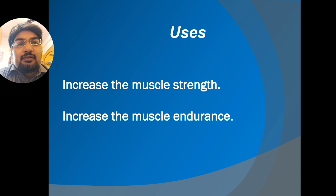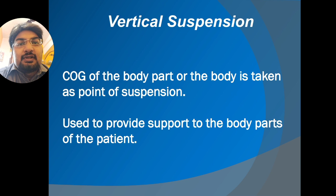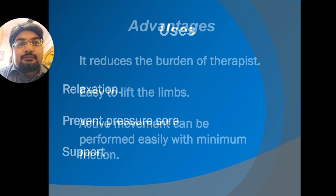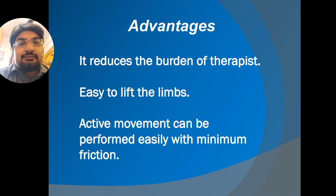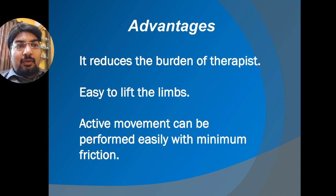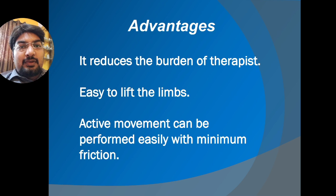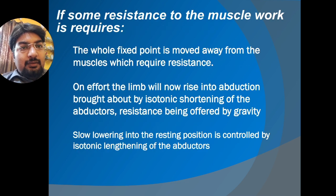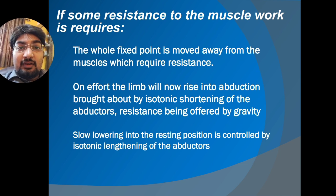Vertical suspension is used purely for support — the center of gravity of the body part is taken as the point of suspension. Advantages include reducing the burden on the therapist, since moving all limbs of a quadriplegic patient manually can cause back pain. It also allows easy lifting of the limb so active movement can be performed easily with minimal friction.